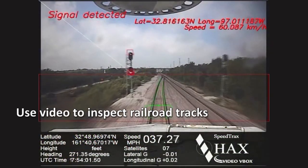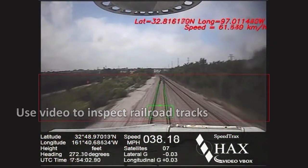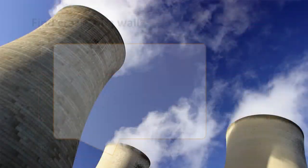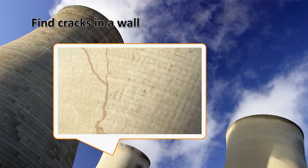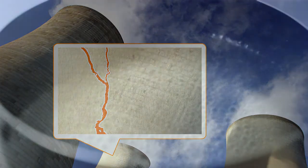You can inspect railroad tracks using video, or inspect for construction defects quickly and inexpensively.